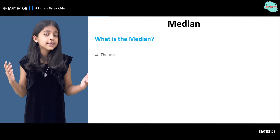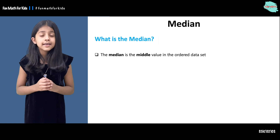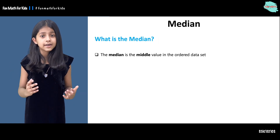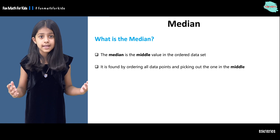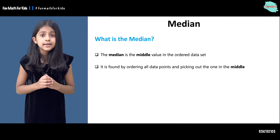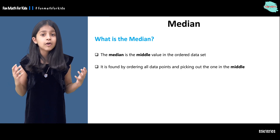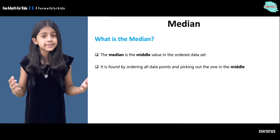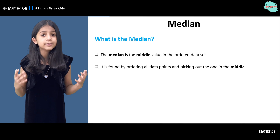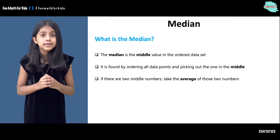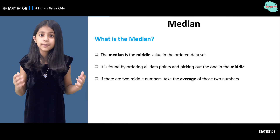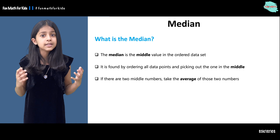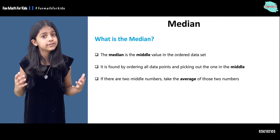What is the median? It is the middle value in an ordered data set. It is found by ordering all the data points and then picking the one in the middle. If there are two middle numbers, take the average of those two numbers.